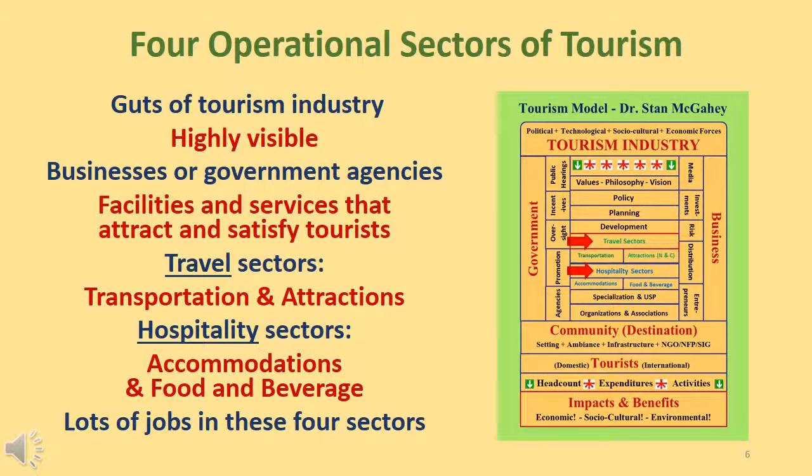Now for the guts of the tourism industry: its four operational sectors. These are the highly visible businesses or government agencies that provide the facilities and services necessary to attract and satisfy tourists. The first two, transportation and attractions, are the travel sectors. And the last two, accommodations and food and beverage, are the hospitality sectors. The four operational sectors are where most of the jobs in the tourism industry are located.